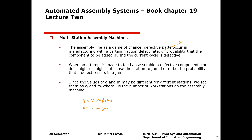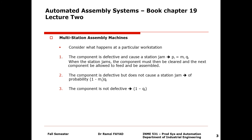So q is the probability that a component is defective, and m is the probability that a defective component will jam the system. Since q and m may be different for different stations, we set them as q_i and m_i for every single station i. Therefore, m times q is the probability that a defective component will jam the system. The probability it is defective but does not cause a jam is 1 minus m times q. The probability a component is not defective at all is 1 minus q.